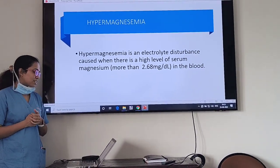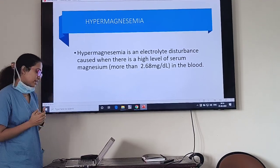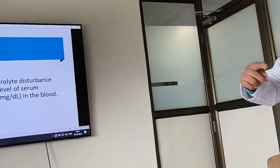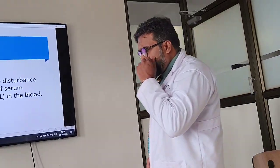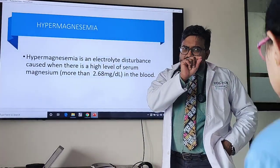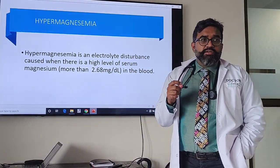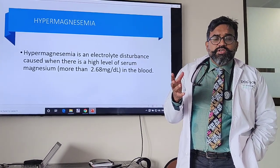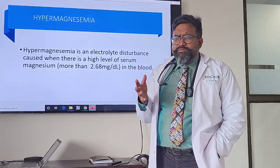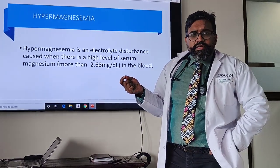Moving on to hypermagnesemia — this is an electrolyte disturbance which occurs when magnesium levels go beyond 2.68 mg per dL. Let's revisit: 1% of total body magnesium is in the serum. 1 gram of magnesium equals 8 milliequivalents — that is what everyone should understand from the first question we asked.